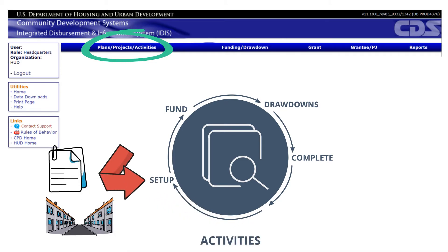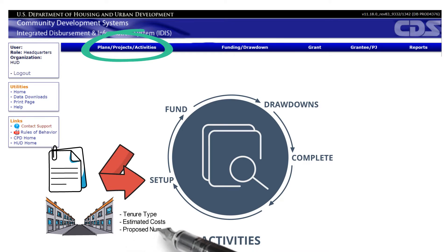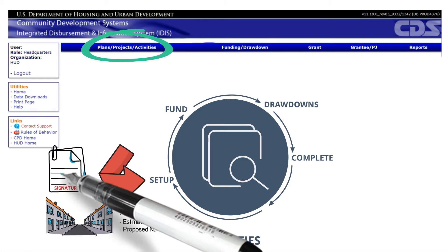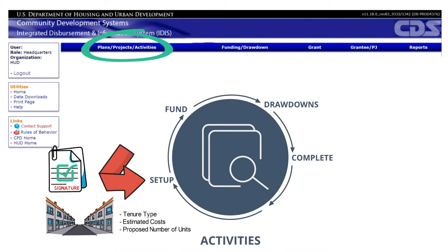When setting up the activity in IDIS, the system requires an address to be entered upon set up, or at least a legal description of the property. Other required set up fields include basic facts about the activity, such as tenure type like rental or home buyer, estimated costs, and proposed number of units. Grantees can find all this required information in the HTF written agreement. Grantees should not set up an HTF activity in IDIS until there is an executed written agreement that includes all of this required information.